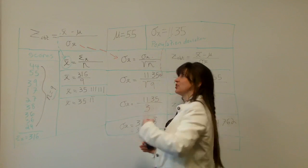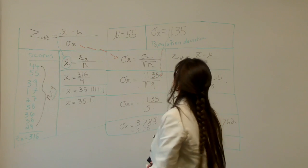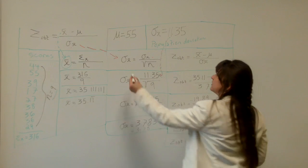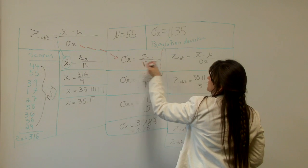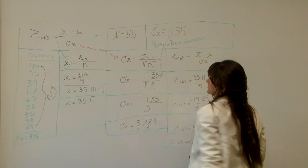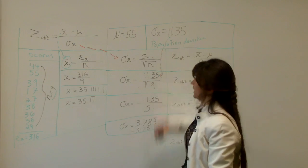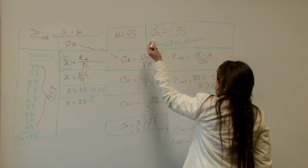Now we get to figure out the population deviation mean. That equals the population deviation divided by the square root of N. So the population deviation, notice up here, that's this, 11.35.